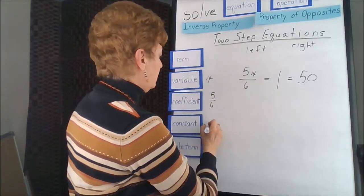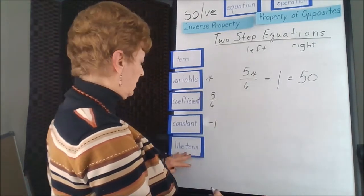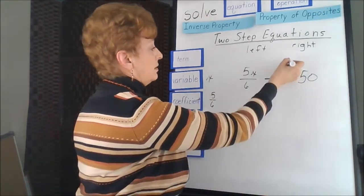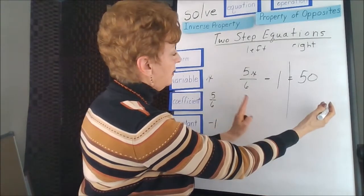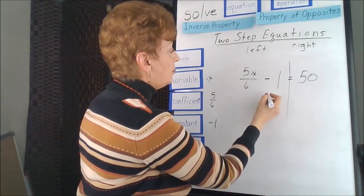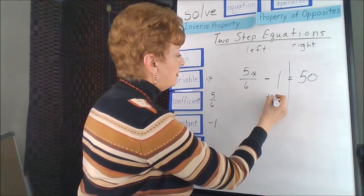The constant, negative 1, like terms, they're on opposite sides of the equal sign. So we're going to have to move off our constant. That's our first step.